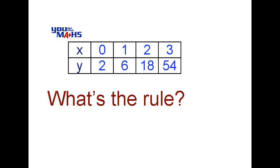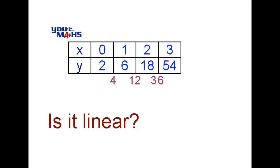The first thing we'll do is have a look and see if there's a linear pattern, and we do that by checking the first differences. We can see that the differences between the y numbers starts at 4, and we achieve that by doing 6 minus 2. The next difference between 18 and 6 is 12, and the difference between 54 and 18 is 36. So that's not constant, so that means it's not a linear pattern.